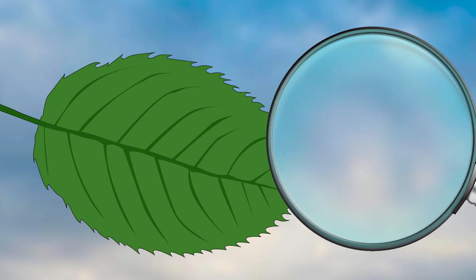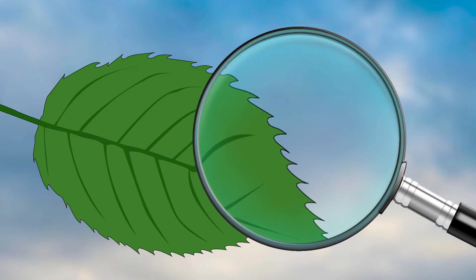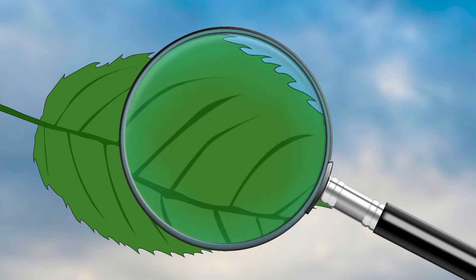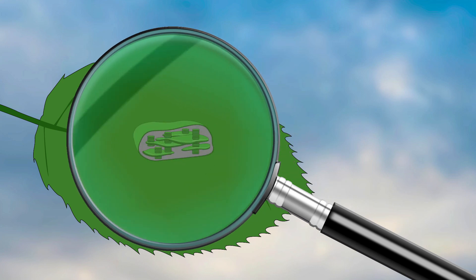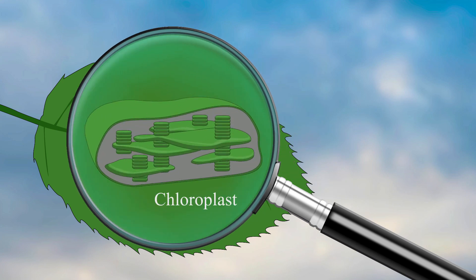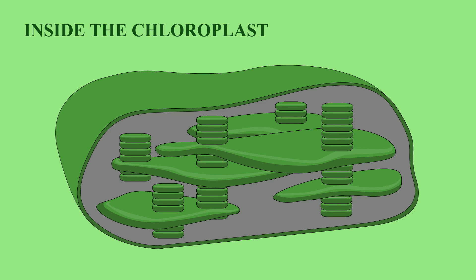Leaves are green because inside each plant cell there are many chloroplasts, each full of the green pigment chlorophyll. The parts of the chloroplast you need to remember to understand photosynthesis are the stroma and the granum, which is a stack of thylakoid disks.